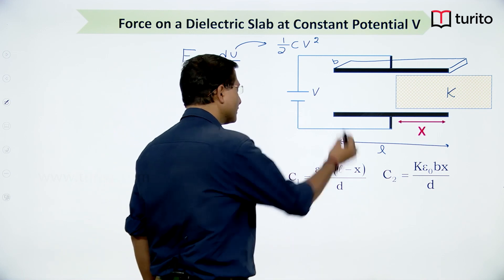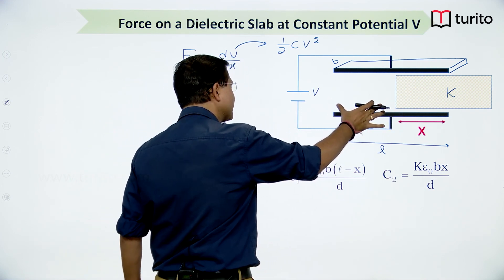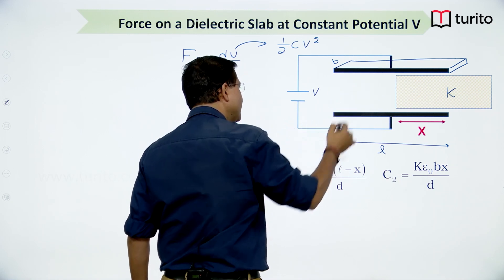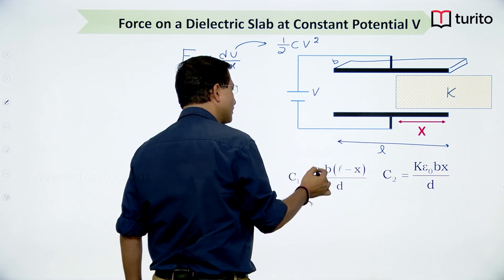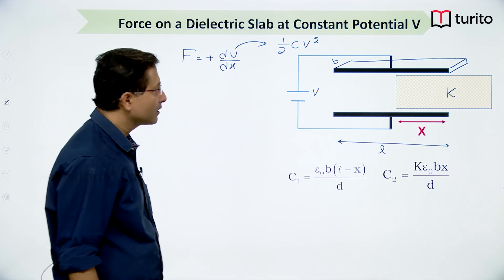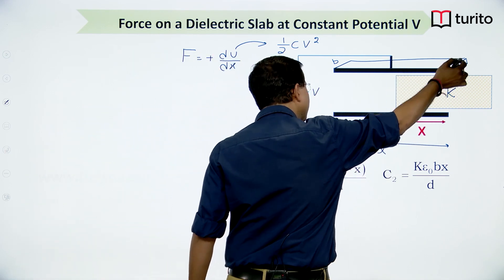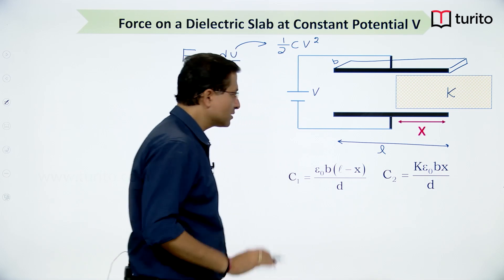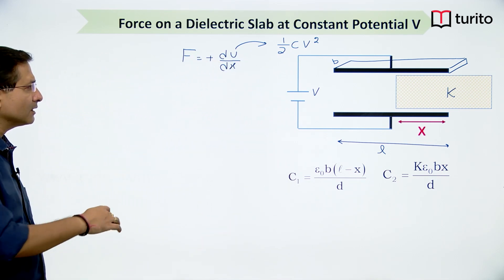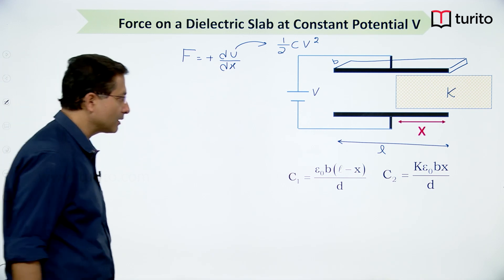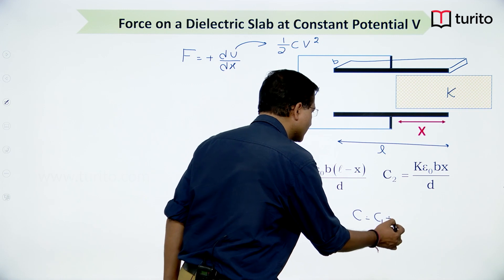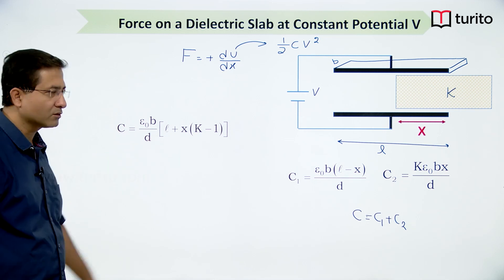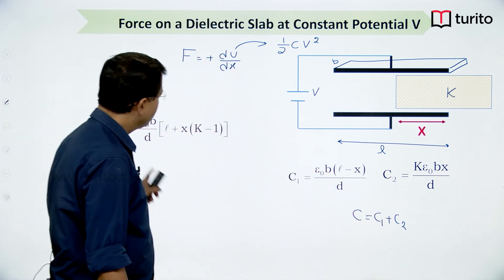C1 has area b(l−x) with no dielectric: C1 = ε₀b(l−x)/d. C2 has the dielectric portion of area bx: C2 = kε₀bx/d. Since they are in parallel, C = C1 + C2 = ε₀b/d times [l + x(k−1)]. Now C is a function of x and I need to differentiate energy, which is in the form of capacitance.